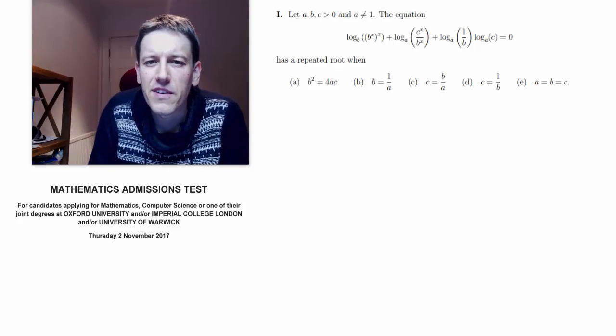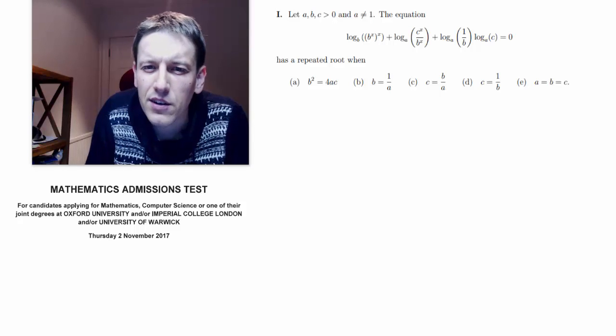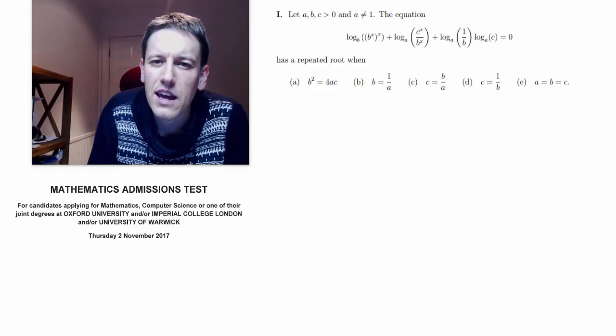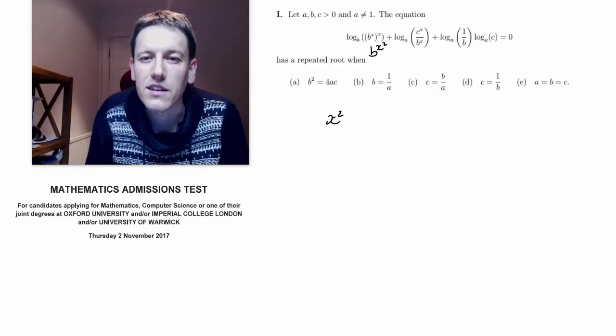I'm going to first just try and simplify down some of these statements. I can see I've got a log b of b to the power of something here. Now b to the x to the x is just b to the x squared with the rules of indices, so log to the base b of that would just give me x squared.